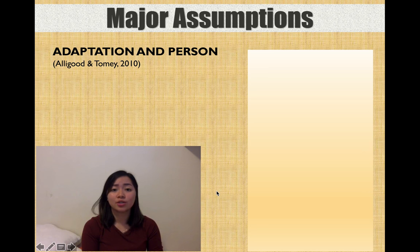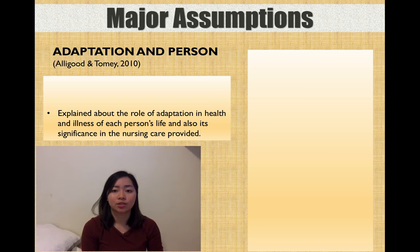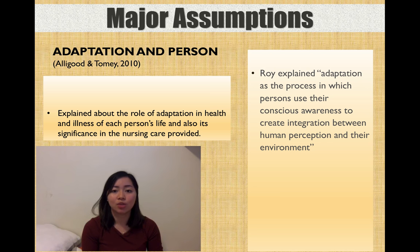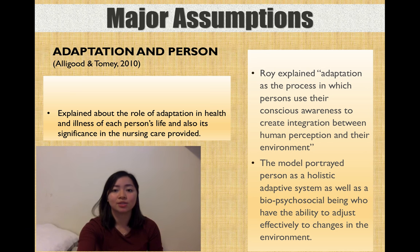Some of the major assumptions the model puts forward are as follows. First, adaptation in person. This explains adaptation, its role in the health and illness of each person's life, and its significance in nursing care. Roy explained adaptation as the process in which a person uses their conscious awareness to create integration between human perception and their environment. The model portrays the person as a holistic adaptive system as well as a biopsychosocial being who has the ability to adjust effectively to changes in the environment.